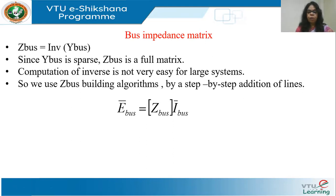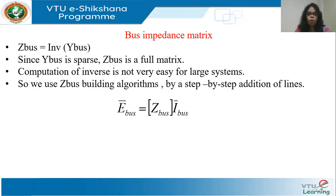The equation we will be using is this, called the impedance reference frame of representation. Here, E_bus (or V_bus) is equal to Z_bus times I_bus. E_bus is the vector of bus voltages, Z_bus is the bus impedance matrix, and I_bus is the vector of current injections at various nodes. E_bus will be an N×1 vector, Z_bus will be an N×N matrix, and I_bus will be an N×1 vector.